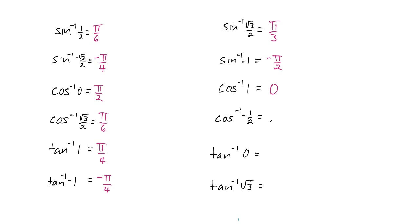Cosine inverse of negative 1 half? Well, negative 1 half means we're in the second or third quadrants, but cosine inverse always gives us an answer between 0 and pi, so this must be 2 pi over 3.